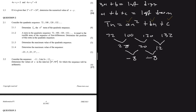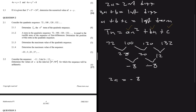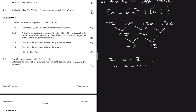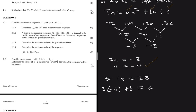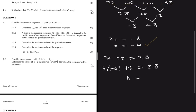Since 2a equals the second difference, 2a = -8, so a = -4. That completes step 1. Next, 3a plus b equals the first term of the first difference, so 3(-4) + b = 28. This gives -12 + b = 28, so b = 28 + 12 = 40.